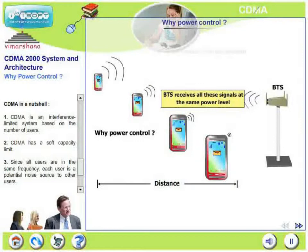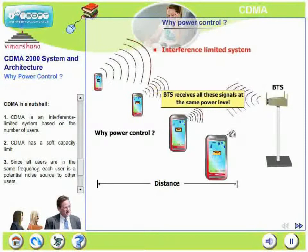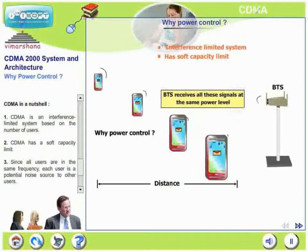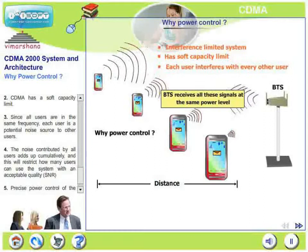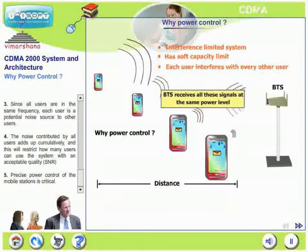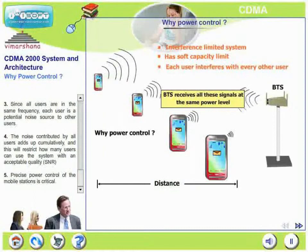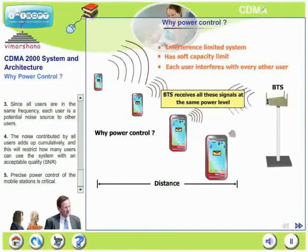CDMA is an interference-limited system with an upper capacity limit called soft capacity. Since all users use the same frequency, each user is a potential noise source to others. The noise contributed by all users adds up cumulatively, restricting how many users can use the system with acceptable quality or acceptable signal-to-noise ratio. Precise power control is therefore very critical in CDMA communications.